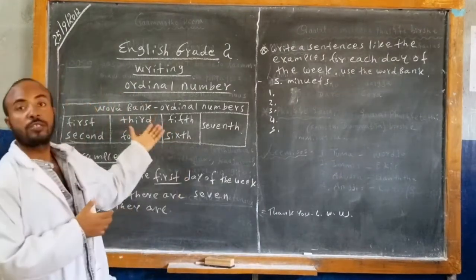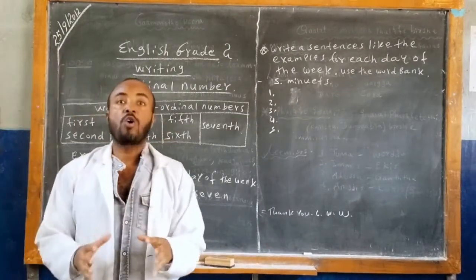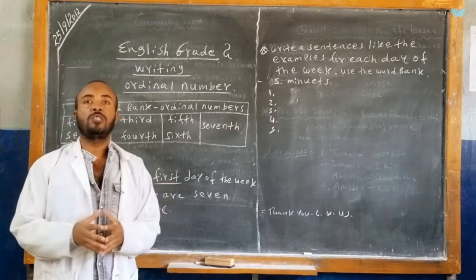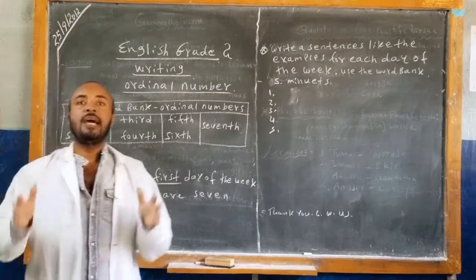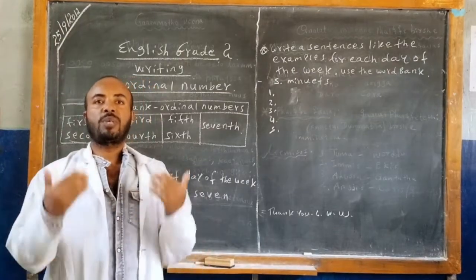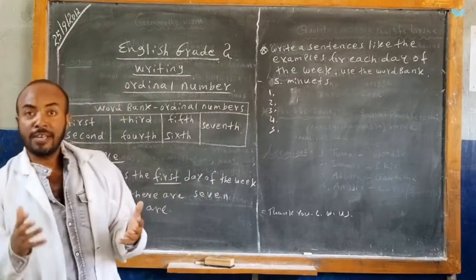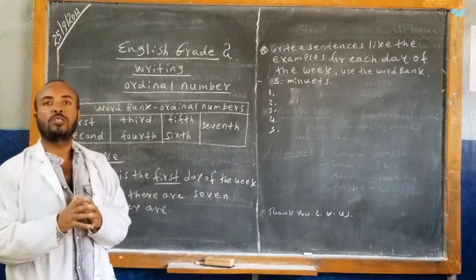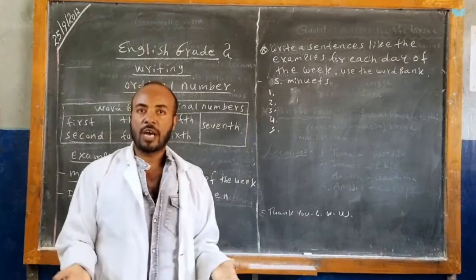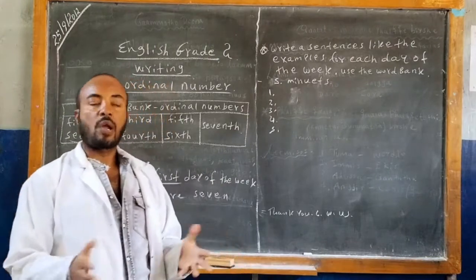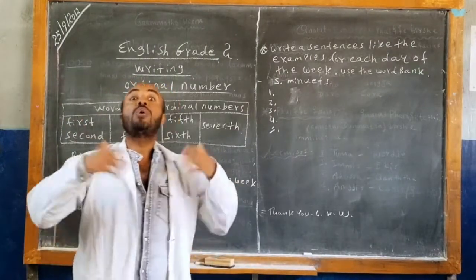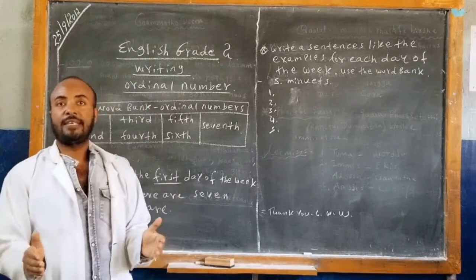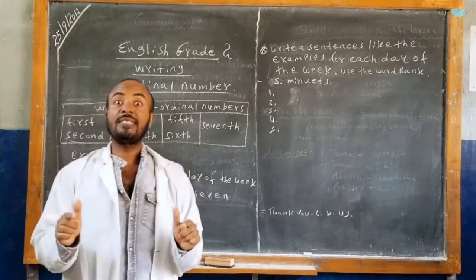Today we learn with students writing the ordinal numbers. Do you remember, students, last time we learned have and has, to express possession — have and has. Last time we learned, do you remember students, 'I have a car, she has a car.' We can make different or variety kinds of sentences using have and has.